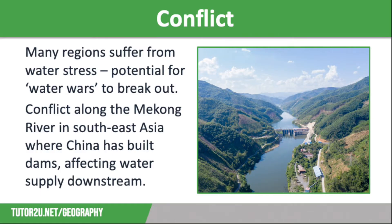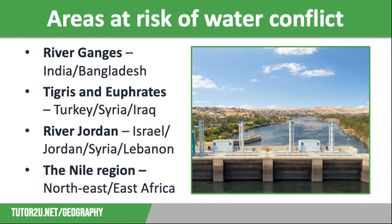There are numerous other areas at risk of conflict over water. Firstly, we have India and Bangladesh. The River Ganges is one of the world's largest rivers and flows through northern India into Bangladesh and into the Bay of Bengal, which is part of the Indian Ocean. Barriers have been built by India to control the flow of water and reduce the risk of flooding, but this has affected water supply in Bangladesh, which has one of the world's highest population densities and a very high demand for water, particularly for agriculture.